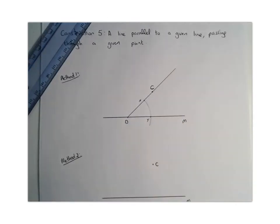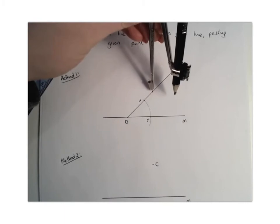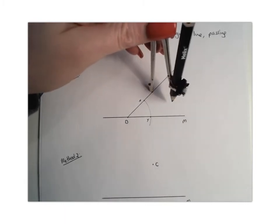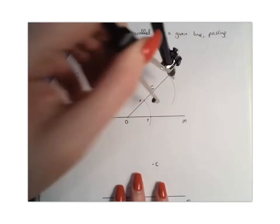The next thing that we're going to do is without changing the width of my compass, I'm going to place the compass at point C. So remember, that was the point that we were trying to draw our perpendicular line through, and we're going to draw an arc just like that.